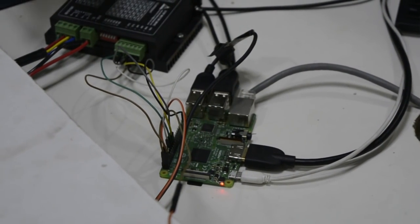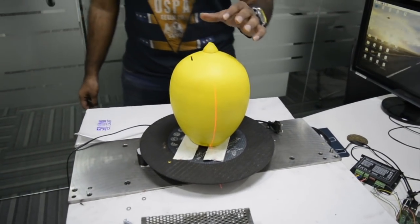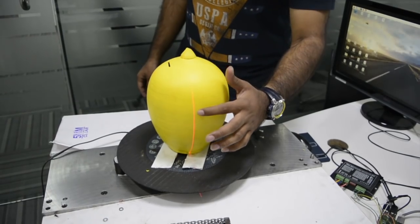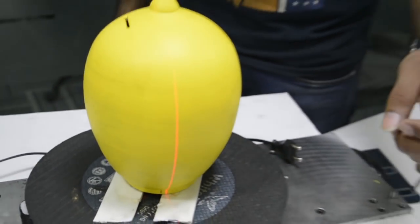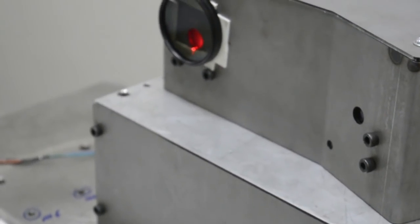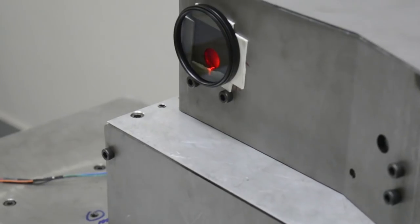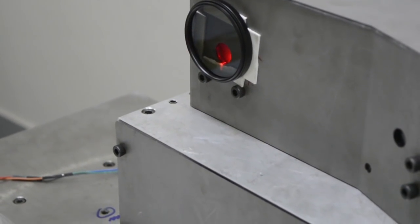These are the connections, this is the Raspberry Pi module 3, and then this is the object which we are going to rotate. You can see here is the red line. This is basically the strip laser. The strip laser having the input voltage required is 5 volt and the power is 2 milliwatt and the laser emitting angle is 90 degree.